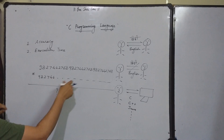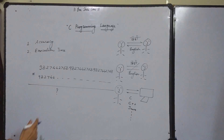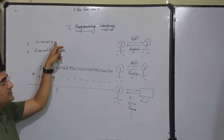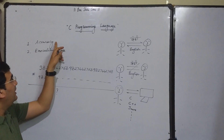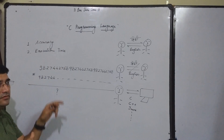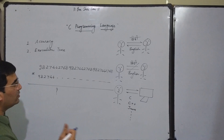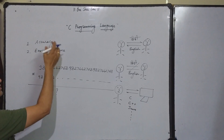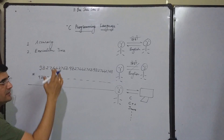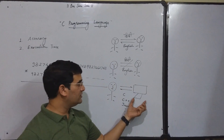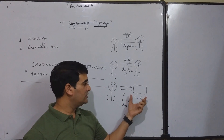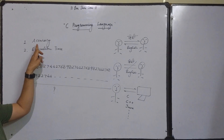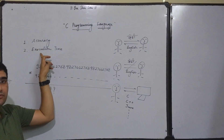Both these problems — accuracy and execution time — can be resolved by the computer. If I ask the computer to perform this calculation, the result generated will be 100% correct. And also within no time, the answer will be there. That is why we use computers. The two important reasons are accuracy and execution time.